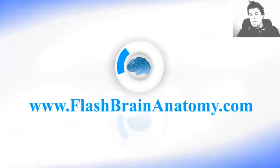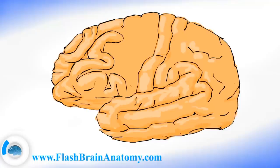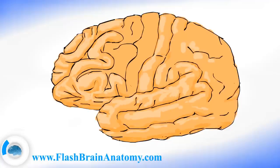Now with the inferior frontal gyri it's a little bit different. We have the triangular part of the inferior frontal gyri, and that is this part over here. The other part is the opercular part of the inferior frontal gyri, and it's this part over here.